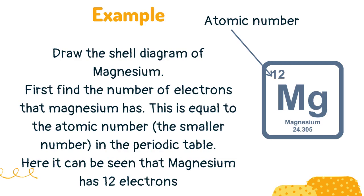First, find the number of electrons that magnesium has. This is equal to the atomic number — the smaller number in the periodic table. Here it can be seen that magnesium has 12 electrons.